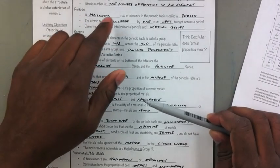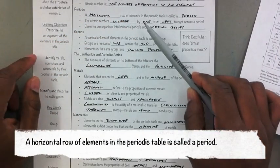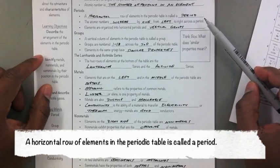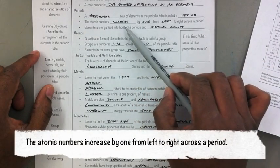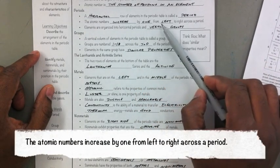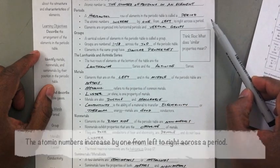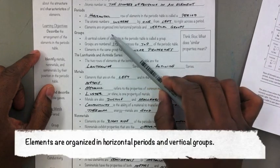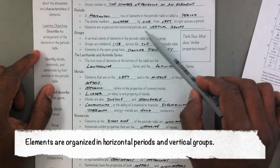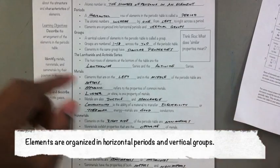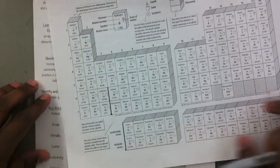A horizontal row of elements in the periodic table is called a period. The atomic numbers increase by one from left to right across a period. Elements are organized in the horizontal periods and vertical rows. Let me show you an example of what we're talking about.